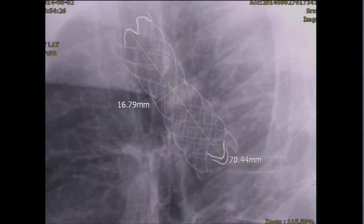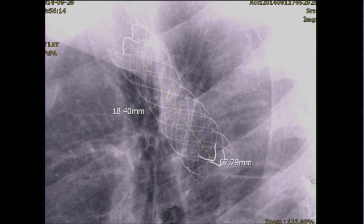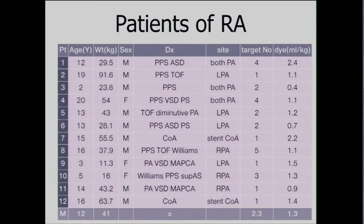The initial result and the later result show it is a little bit enlarged — it is a 20 mm expandable stent. So far I have performed rotational angiography in 12 patients. Most of them have peripheral pulmonary stenosis and 2 patients have coarctation of aorta. The mean age was 12 years and 41 kg. The mean number of target vessels was 2.3 per catheterization, and the mean contrast amount was 1.3 ml/kg — much less than the usual angiogram for peripheral pulmonary stenosis intervention.